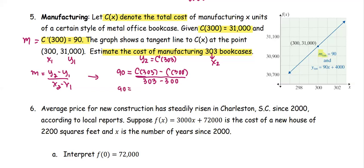Substituting the numbers: m is 90, the cost at 303 is what we are looking for, the cost at 300 is given to be 31,000, divided by the difference of 303 and 300, which is 3. Now we're going to simplify and solve for the unknown C(303).